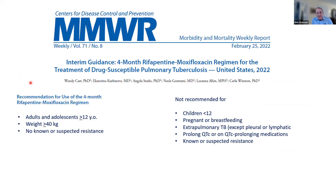Just a couple of weeks ago, the CDC issued updates to US guidelines for treating TB and recommended this four-month regimen for adults and adolescents over 12, over 40 kilograms, who don't have known or suspected resistance to any of the drugs in the regimen. The WHO recommended this regimen last year, shortly after publication of the study in the New England Journal.